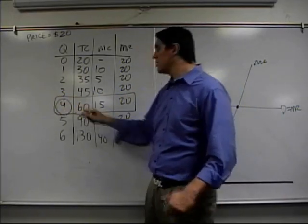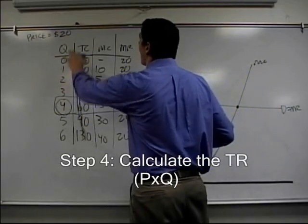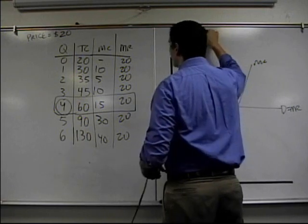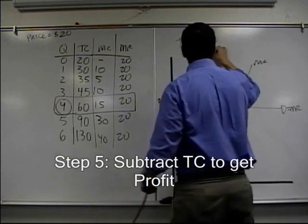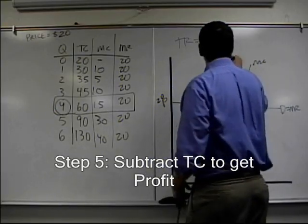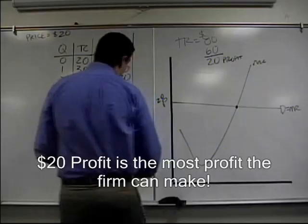And those numbers tell me what I need to know is how much total revenue. Well, 4 times 20 total revenue in this situation is going to give me 80. My total cost, it says, is 60. So my profit is going to be $20 profit. Again, $20 profit. So that's the concept and done.